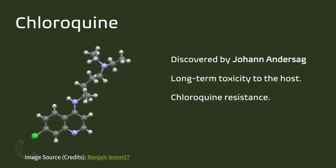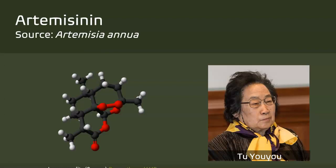Chloroquine was one of the first drugs used and was discovered by Hans Andersag. It has long-term toxicity to the host, and Plasmodium has developed resistance to it — they have evolved a complex method of pumping chloroquine out of their cells to avoid its toxicity. The other drug was discovered in China by Nobel laureate Tu Youyou — Artemisinin, derived from the plant Artemisia annua. She discovered it by referencing the herbal pharmacopoeia of China, reading through drugs documented by early practitioners perhaps 3,000 to 4,000 years ago. She focused on this one plant, purified the drug, and it has since been synthesized. For these efforts she was awarded the Nobel Prize.